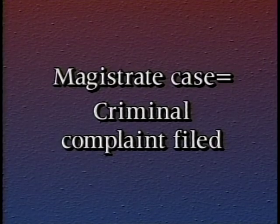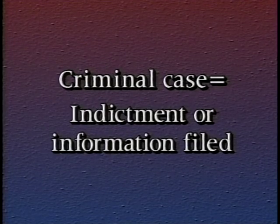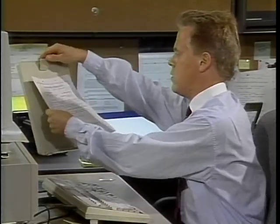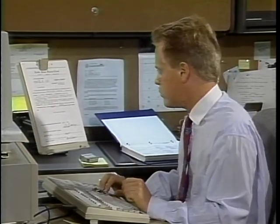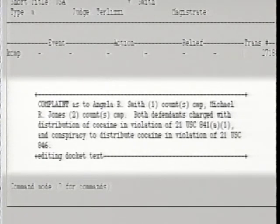Many criminal cases begin as magistrate cases. For docketing purposes, a magistrate case refers to a case in which a criminal complaint has been filed, while a criminal case refers to a case in which an indictment or information has been filed. Most misdemeanor cases and pre-indictment felony cases are assigned to magistrate judges; once an indictment is returned, a felony case is assigned to a district court judge. When the complaint signed against Smith and Jones is filed in the district court, a magistrate case with two defendants is opened in ICMS Criminal.